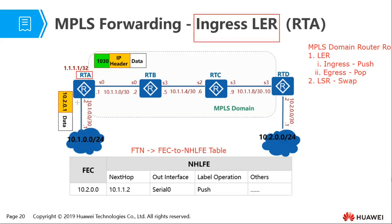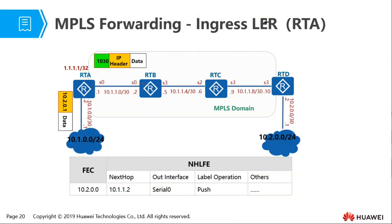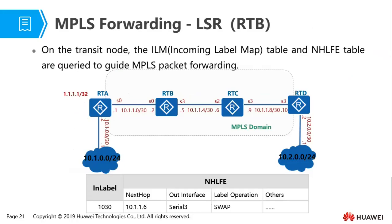When RTA receives the packet, it checks the destination and consults the FTN table. It sees it must forward to next hop 10.1.1.2, out through interface Serial 0. The label operation is push — insert a label into this packet. The NHLFE may also contain the encapsulation mode used to transport data.